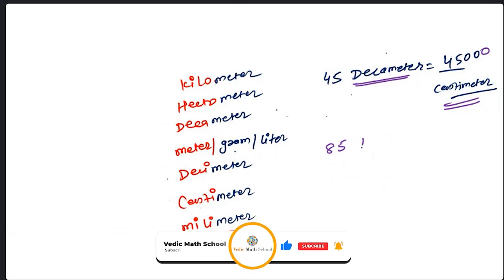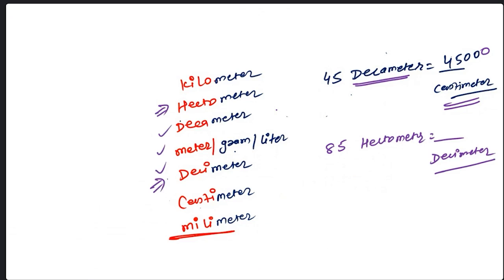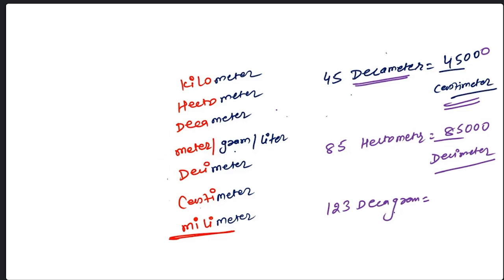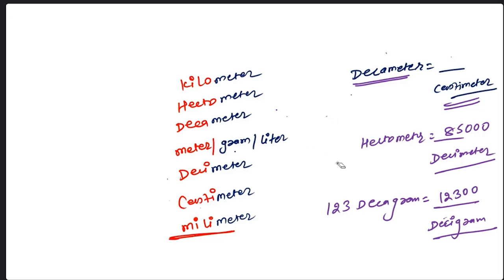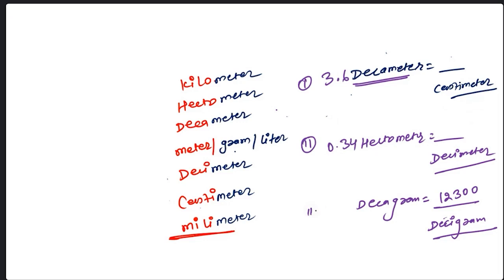Tell me the next questions. 85 hectometers equal to how many decimeters? Hectometer to decimeter: 1, 2, 3 — difference is 3, so answer is 85000. Now here are more questions: 33.6 decameters equal to how many centimeters? 0.34 hectometers equal to how many decimeters? And 1 decagram equal to how many decigrams?